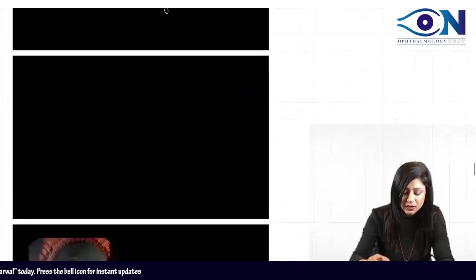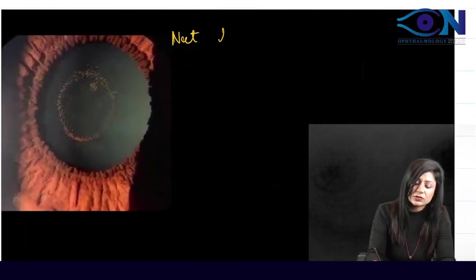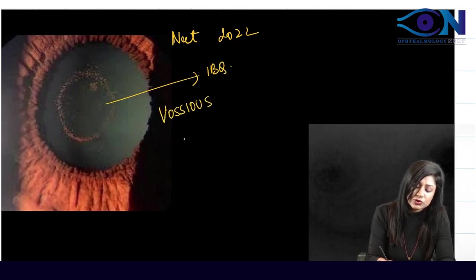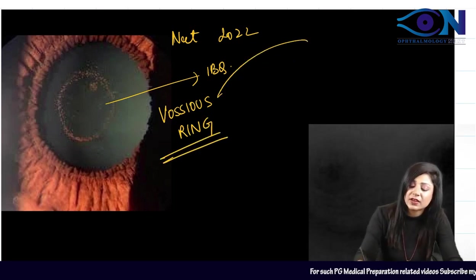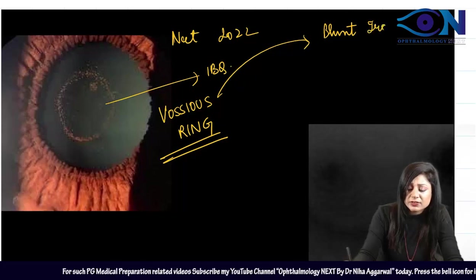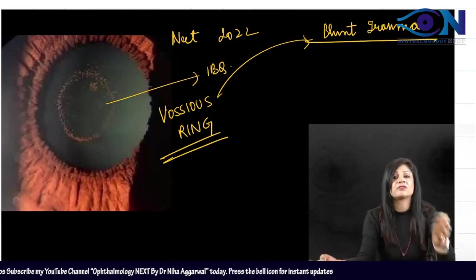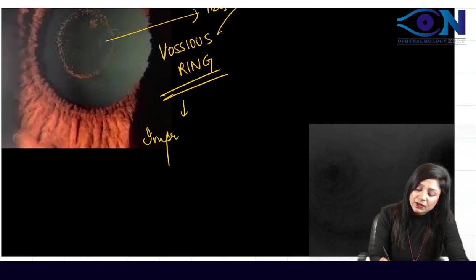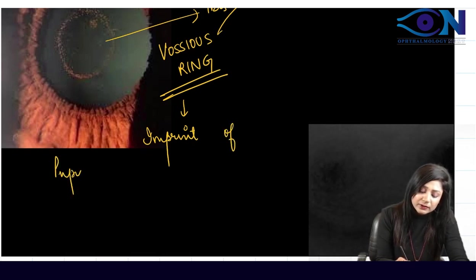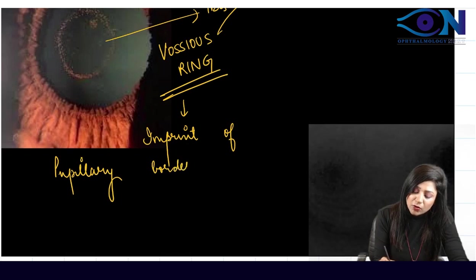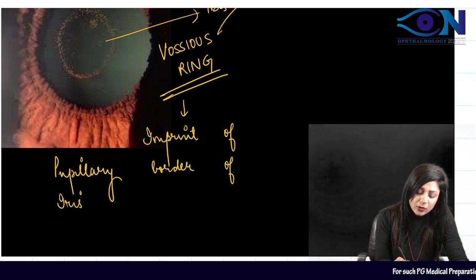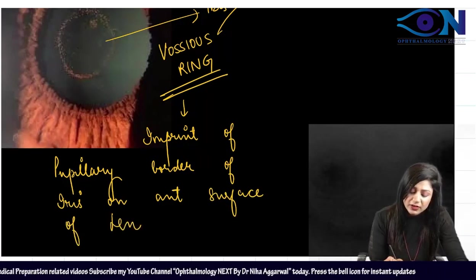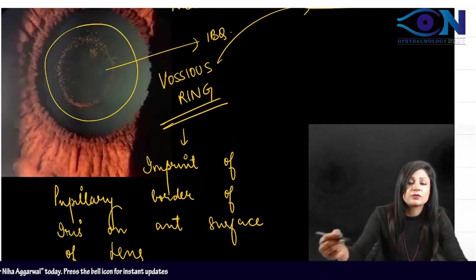This is the Vossius ring, found in blunt trauma. It appeared as an image-based question in NEET 2022. The Vossius ring is the imprint of the pupillary border of the iris on the anterior surface of the lens — a brownish imprint visible on examination.